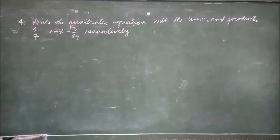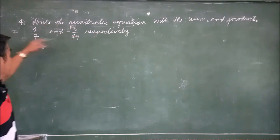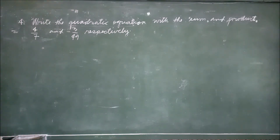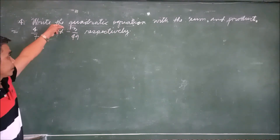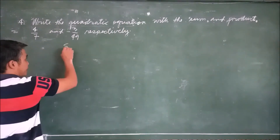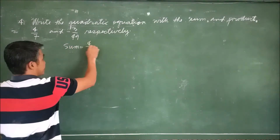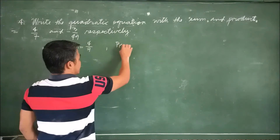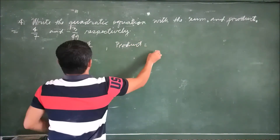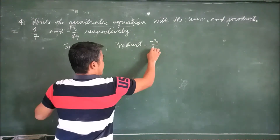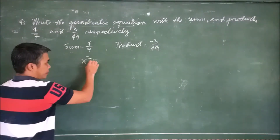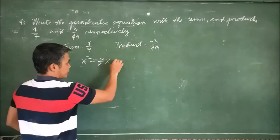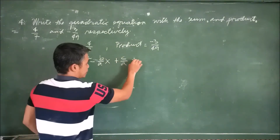Here's another example, a bit more complicated. Same type of problem: write the quadratic equation with sum and product 4/7 and negative 3/49 respectively. The sum equals 4/7 and the product equals negative 3/49. The formula remains: x² minus (b over a)x plus (c over a) equals 0.